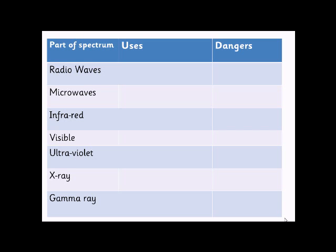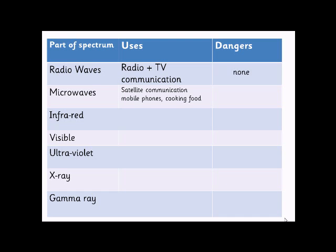You're also expected to know uses and potential dangers of these waves. Radio waves are used for radio, TV, and communication between devices. They're not particularly dangerous — which is fortunate, given how many phones and televisions surround us every day. Next are microwaves, used for mobile phones and microwave ovens.